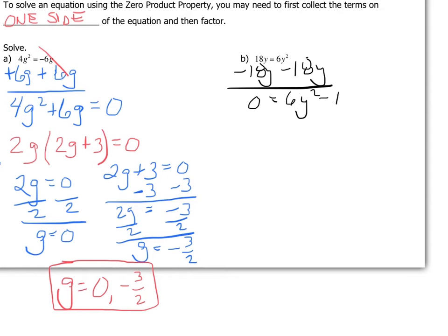So here's where I want to now say I have the zero on the left hand side. Can I get the right hand side to be factored with a GCF first?